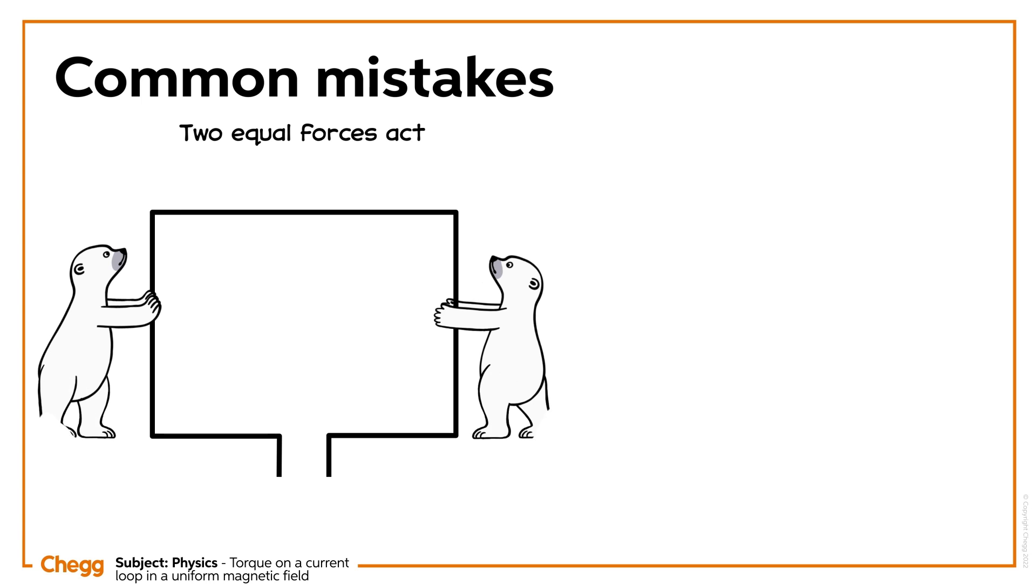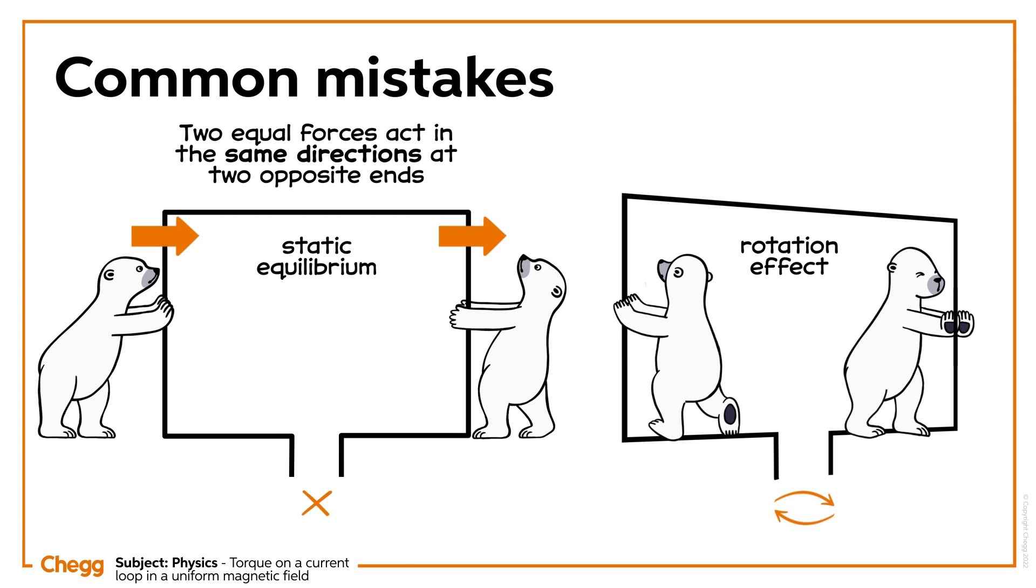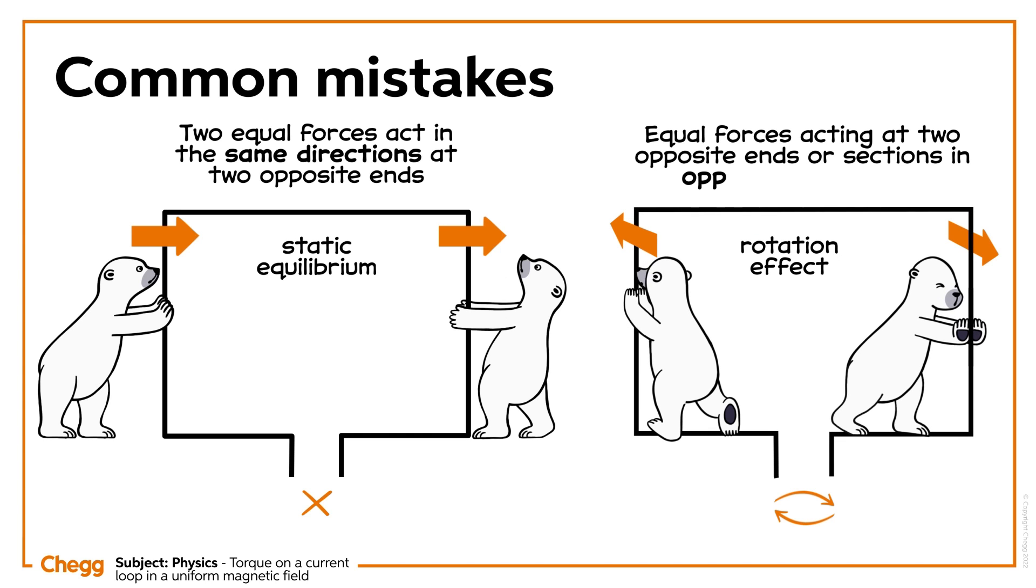When two equal forces act in the same direction at two opposite ends, there is a possibility of static equilibrium. So to have the rotation effect, there should be equal forces acting at two opposite ends or sections in opposite directions.